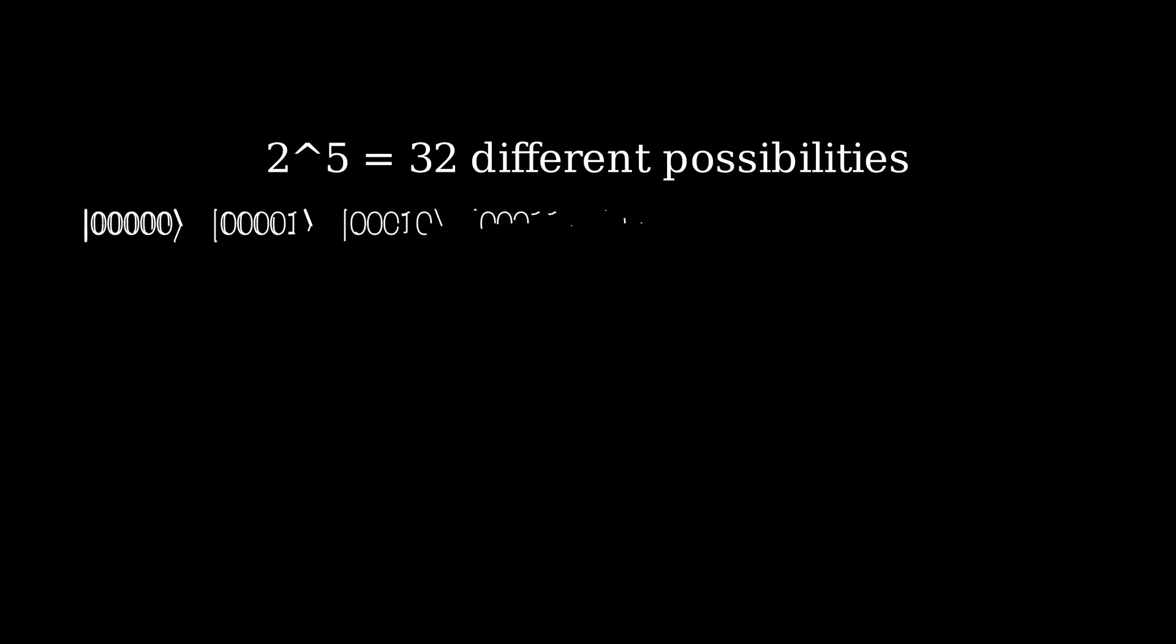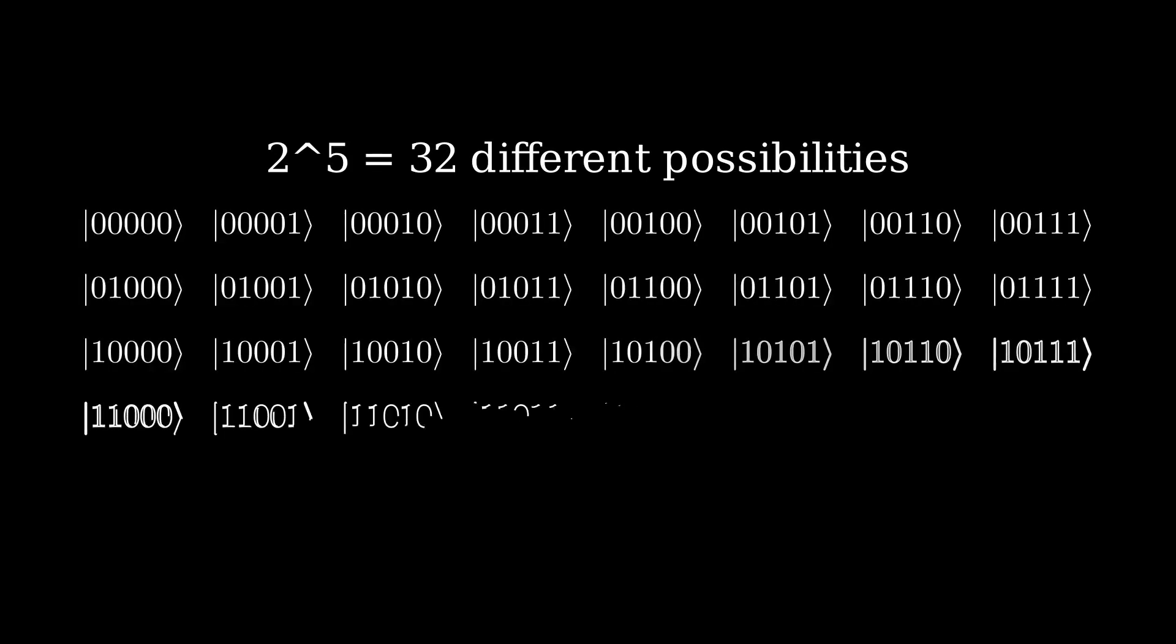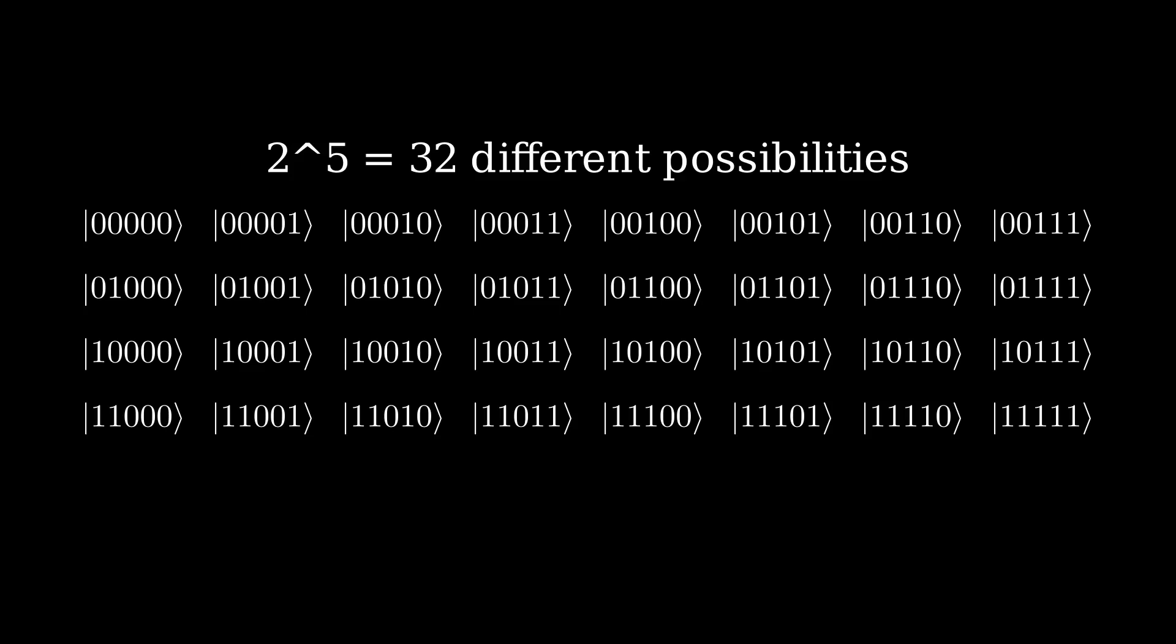Each 5-bit long string of 1s and 0s here is a possible answer. We just need an algorithm to find which answer is the correct one, depending on the specific problem. Applying the Walsh-Hadamard transform is the step that puts us into the superposition of all possible answers, so that our algorithm can take it from there and move around the probabilities.